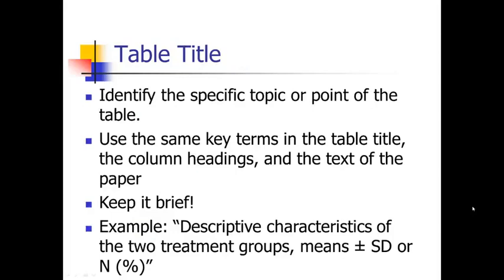Now let's talk about how to format a table. A table has a title, and those are usually pretty easy. You need to identify the specific topic or point of the table — what's the story? Make sure you repeat the same key terms in the table title, the column headings, and in the main text of the paper. As we talked about a couple of weeks ago, it's okay to repeat those key terms for consistency so the reader isn't confused. Keep the table title as brief as possible but include all key information — for example: 'Descriptive characteristics of the two treatment groups. Means ± standard deviation or n (%)' — telling readers exactly what statistics are presented.